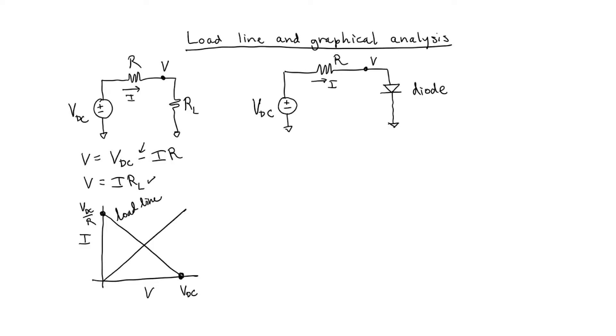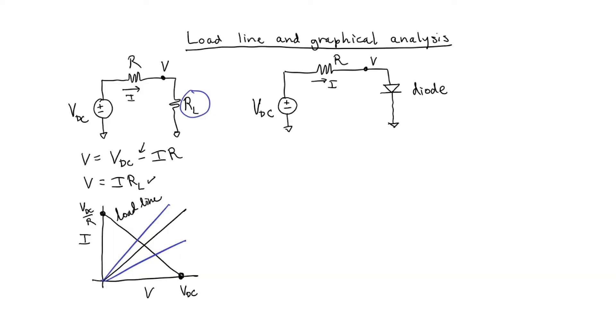This line is called the load line, and the reason it's called the load line is because if we change the load, that particular line remains the same. You see, if we change the resistor RL, then the slope of this line might change, but it doesn't change the load line, and what the load line can tell us is the operating point of the circuit. For example, with the original RL, we can see where these two curves intersect, and this will tell us the operating point.